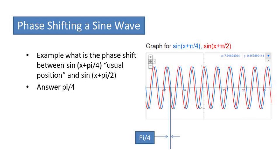What is the phase shift between sine x plus pi over 4, the usual position, and sine x plus pi over 2? The answer is pi over 4 because there's pi over 4 distance between the two functions.